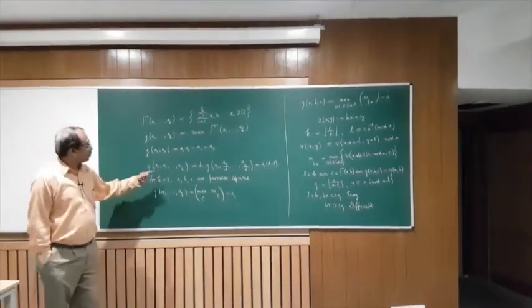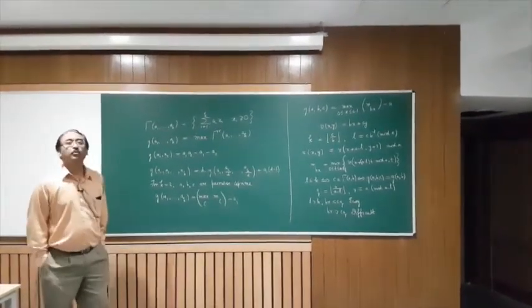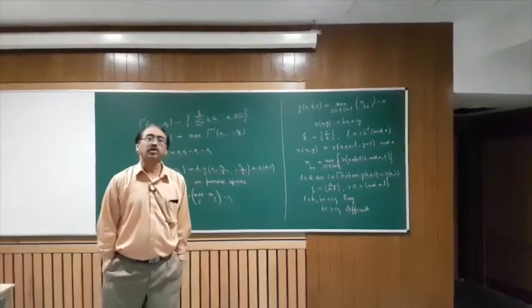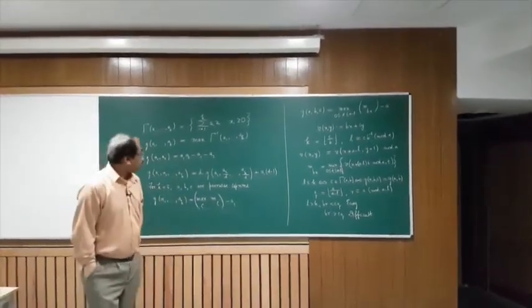The reduction formula of Johnson helps us assume without loss of generality that in the three-variable case, the three variables a1, a2, and a3 are pairwise co-prime.